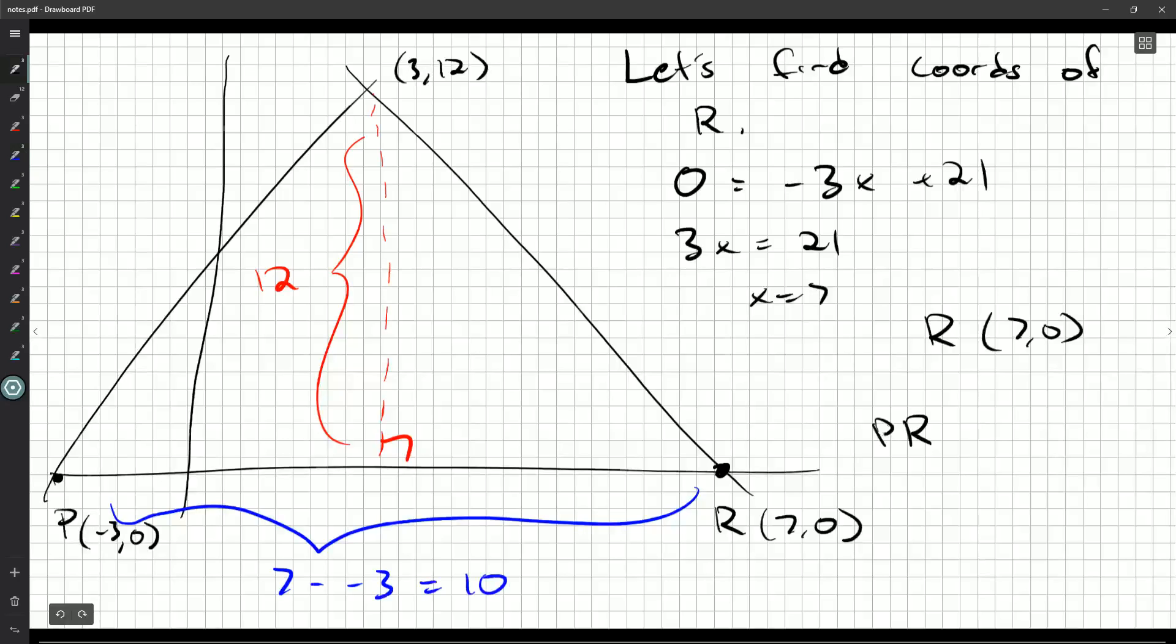So I would probably say that PR is 10. You could even show the calculation seven minus negative three, but I think that's fine. So PR is 10. And I would say the height is 12. You could even say as shown.